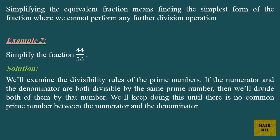Simplifying an equivalent fraction means finding the simplest form of the fraction, where we cannot perform any further division operation. Example 2: Simplify the fraction 44 over 56. Solution: We'll examine the divisibility rules of the prime numbers. If the numerator and the denominator are both divisible by the same prime number, then we'll divide both of them by that number. We'll keep doing this until there is no common prime number between the numerator and the denominator.